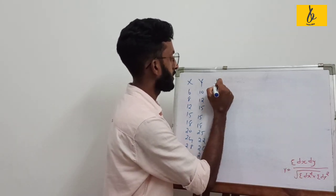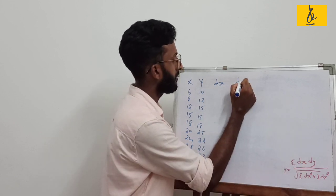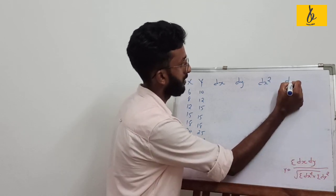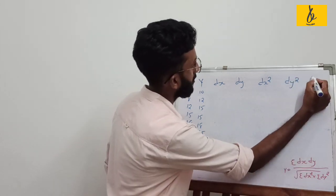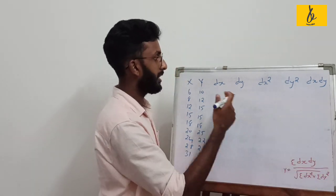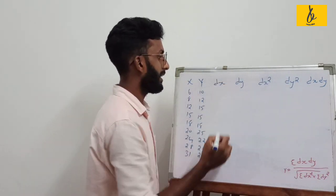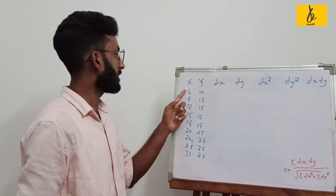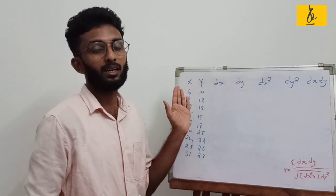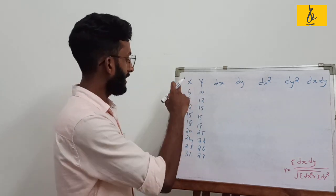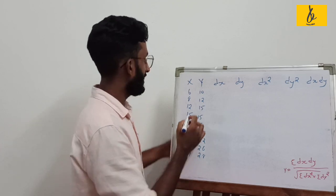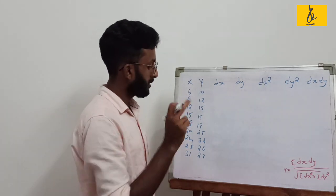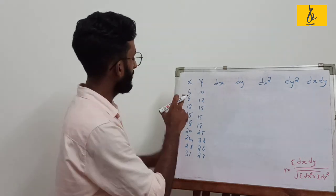In the table, dx represents the deviation from the mean. What is the difference between mean and dx? The mean is the total value divided by the number of observations.